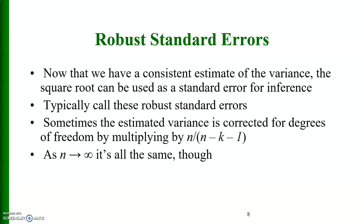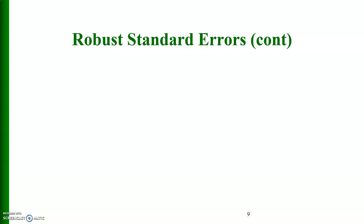Now that we have a consistent estimate of the variance, the square root can be used as a standard error for inference. We typically call these robust standard errors. Sometimes the estimated variance is corrected for degrees of freedom by multiplying by n divided by (n minus k minus 1). As n increases, it is all the same though.